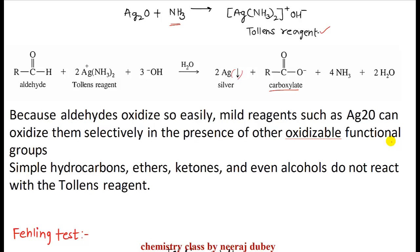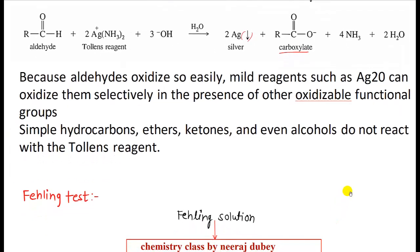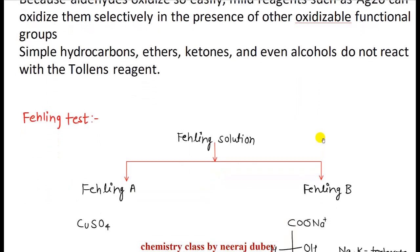Silver oxide is a mild oxidizing agent, and therefore it can only oxidize aldehydes because aldehyde oxidation happens easily. But if other functional groups are present — such as hydrocarbon, ether, ketone, or alcohol — they will be retained and will not be oxidized by Tollens' reagent.